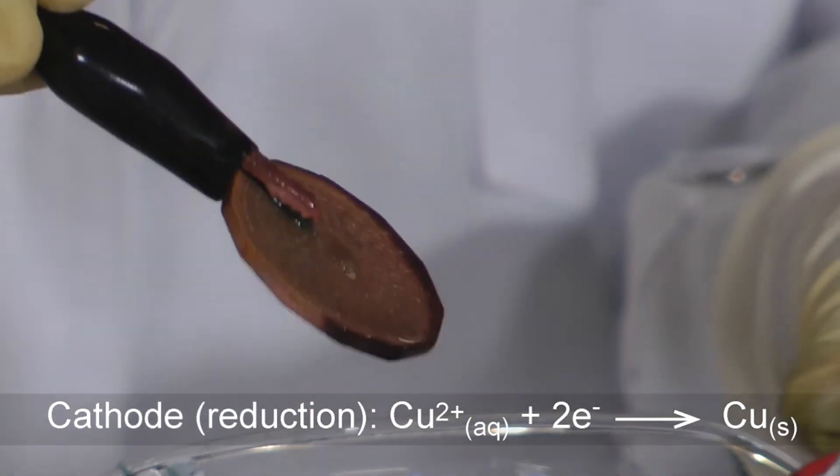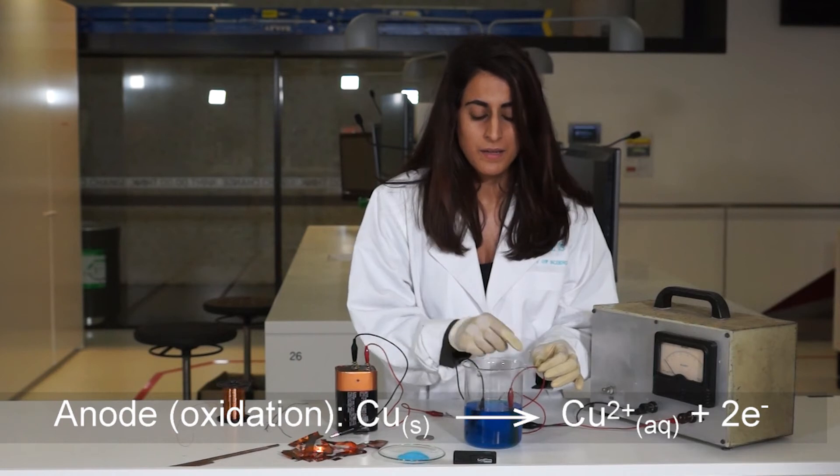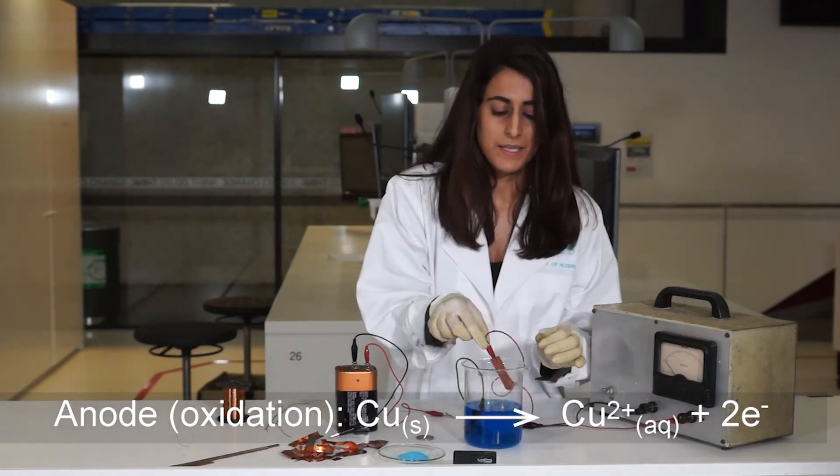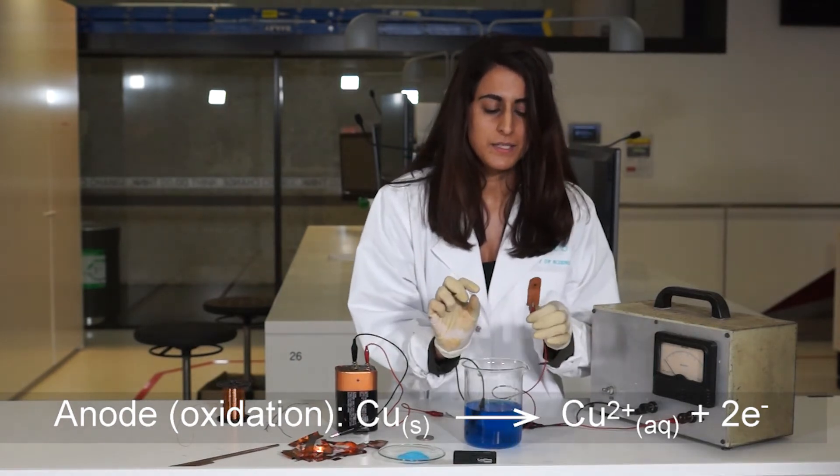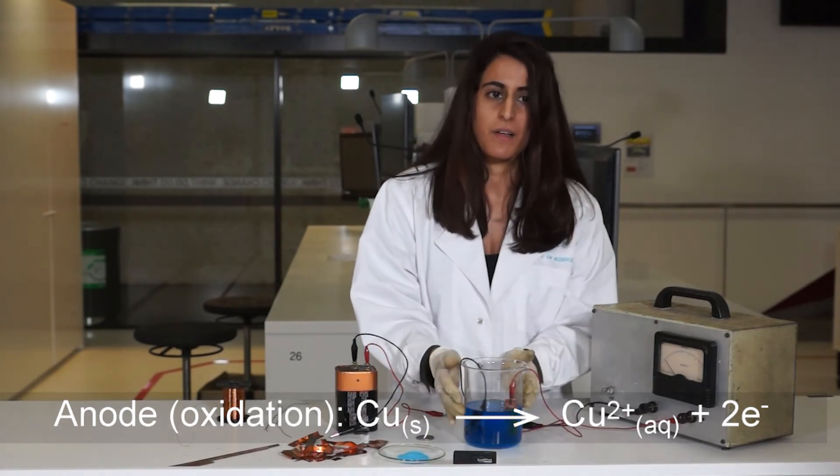And although the sulfate ions are attracted to the positive anode, they aren't discharged. The copper metal in fact is discharged. It loses electrons and passes through the solution replenishing the electrolyte.